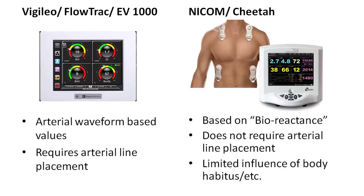Fortunately, there are several devices available in our hospital system that can measure this. The Vigileo or FlowTrack monitor measures these and other proprietary values to determine cardiac output and stroke volume variability. Because this is based on arterial waveform, it requires arterial line placement and is subject to the errors of arterial line placement.